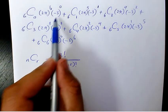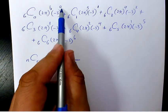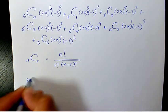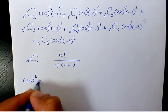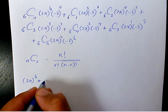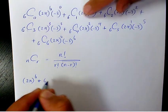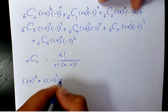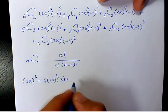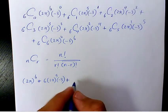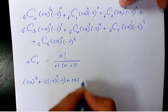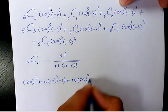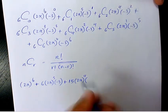So the coefficients are 1, 6, 15, 20, 15, 6, 1. The first term: 1 times (2x)^6 times (-3)^0 equals (2x)^6. Plus 6 times (2x)^5 times (-3), plus 15 times (2x)^4 times (-3)^2.